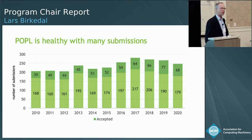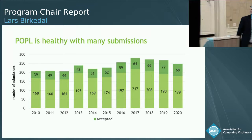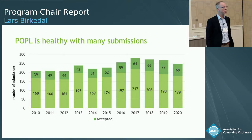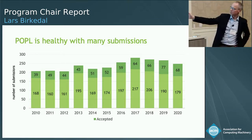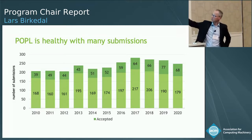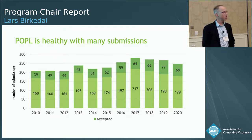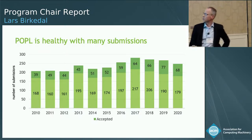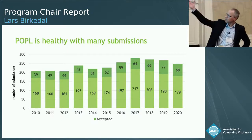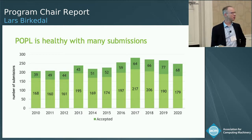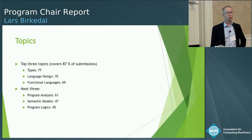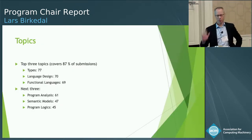I'll start by showing you the submission numbers. We had 247 submissions. As you can see from the numbers for every year, we are still having very many submissions, so I think it's safe to conclude, as last year, that POPL is healthy and gets many good submissions every year. 68 papers were accepted this year — about a 27.5% acceptance rate.